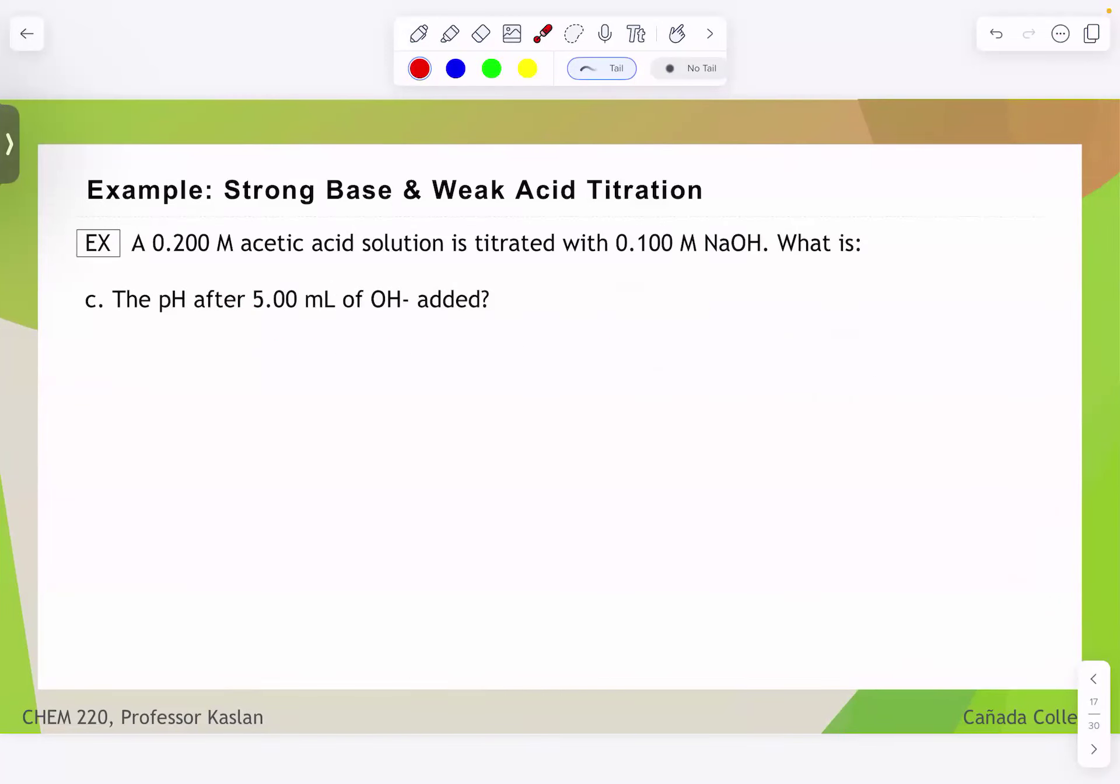In our next video, we're going to think about what happens when we start to add our hydroxide. Because some kind of chemistry is going to happen there. And that's going to affect everything going on in our little sample beaker. So we'll see you in our next video where we determine the pH of the solution after we've add five milliliters of sodium hydroxide titrant.